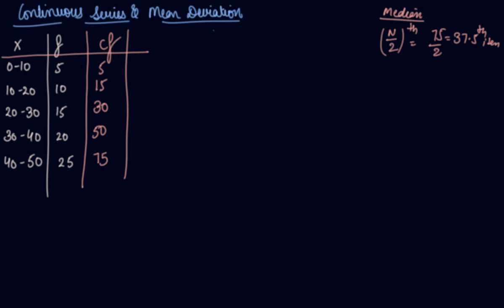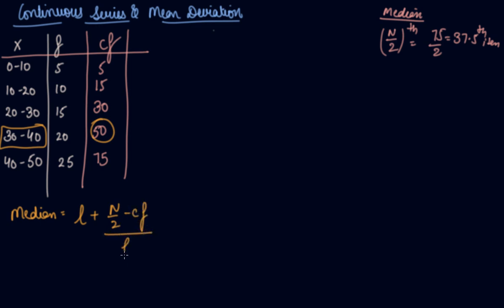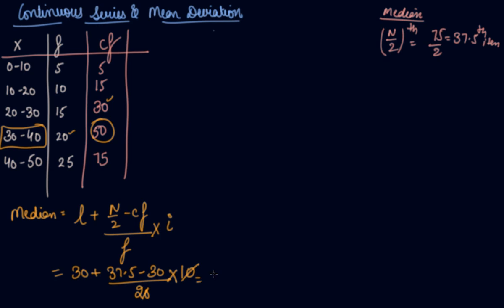The 37.5th item comes in cumulative frequency 50, so that becomes the median class. The formula to calculate median was: lower limit of the median class plus n divided by 2 minus cumulative frequency of the preceding class, divided by frequency of the median class, into i (class size). Lower limit is 30, n/2 is 37.5, cumulative frequency is 30, frequency is 20, and class size is 10. So the answer we got is 33.75 — that is your median.